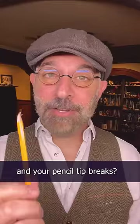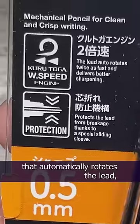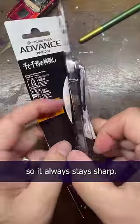Don't you hate it when you're drawing and your pencil tip breaks? Well, apparently there's a new mechanical pencil that automatically rotates the lead so it always stays sharp.